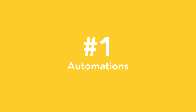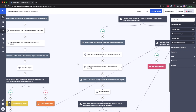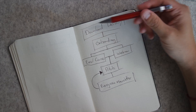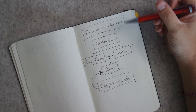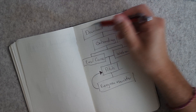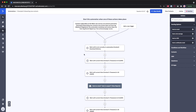Number one is automations. I absolutely love the visual automation builder inside ActiveCampaign, which you can use to automate everything from the moment someone opts in until they become a customer. For example, I have a download delivery automation — when someone requests a checklist or cheat sheet, this automation delivers it.